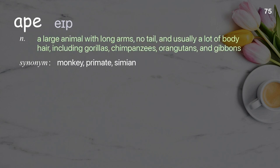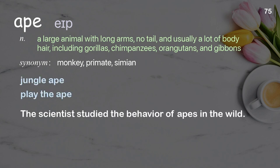Ape: A large animal with long arms, no tail, and usually a lot of body hair, including gorillas, chimpanzees, orangutans, and gibbons. Examples: Jungle ape. Play the ape. The scientist studied the behavior of apes in the wild.